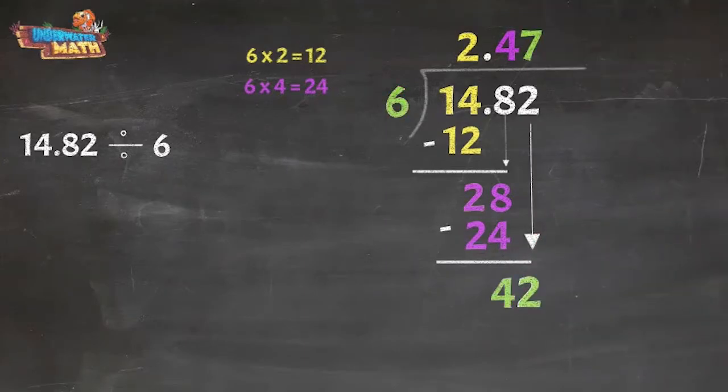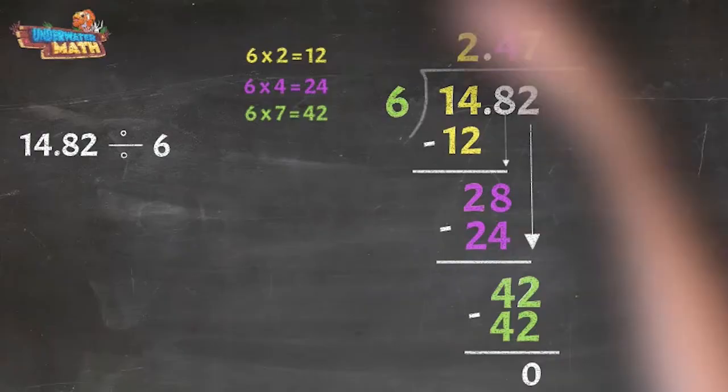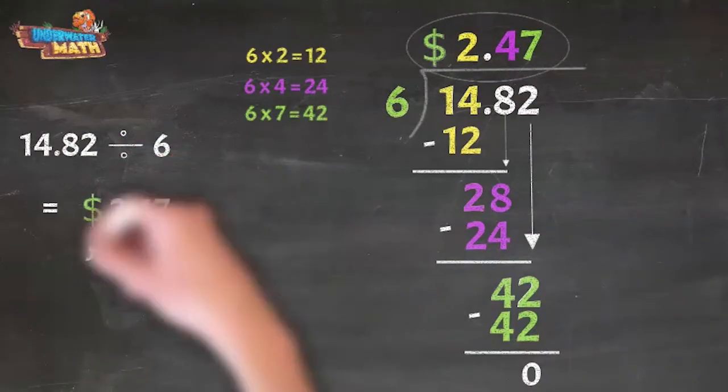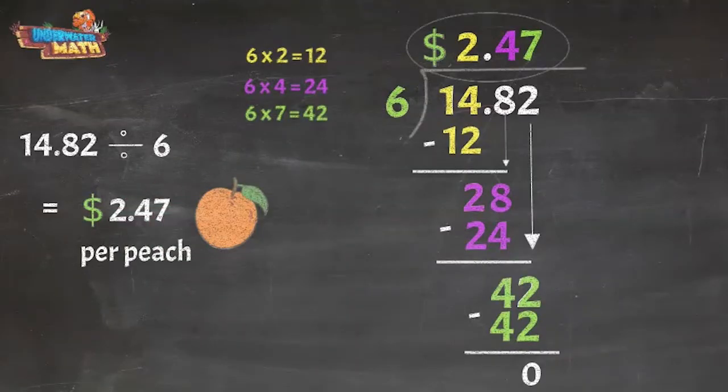Six goes into 42 seven times, and six times seven is exactly 42. So when we subtract we are left with zero and we have finished. Beautiful work! Each peach costs $2.47.